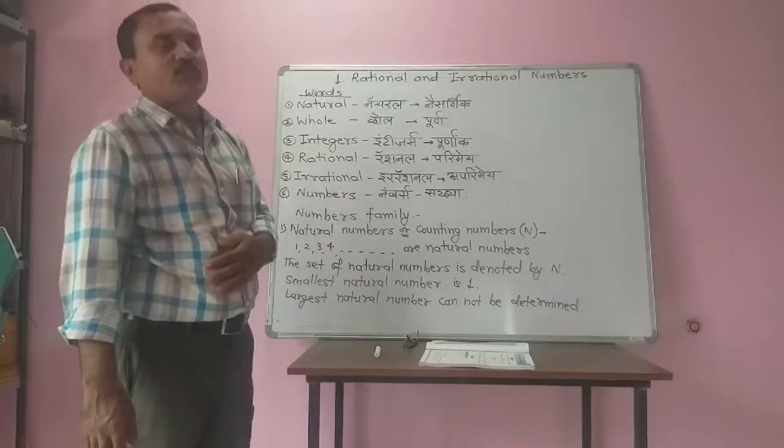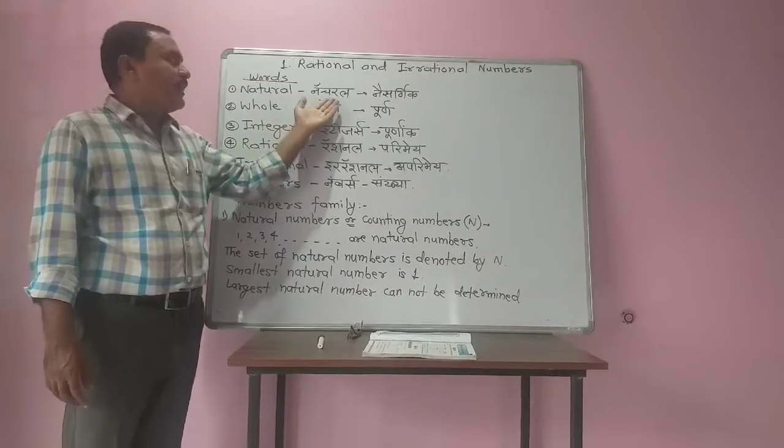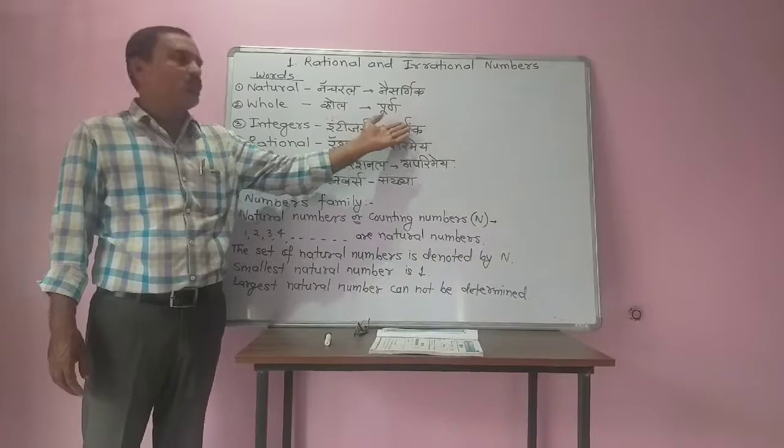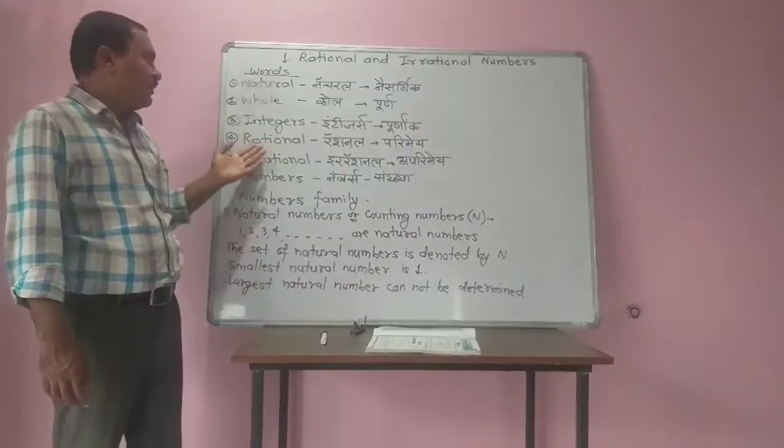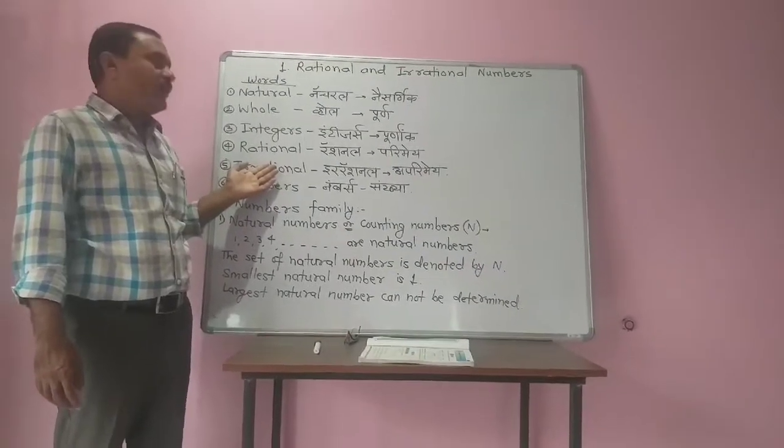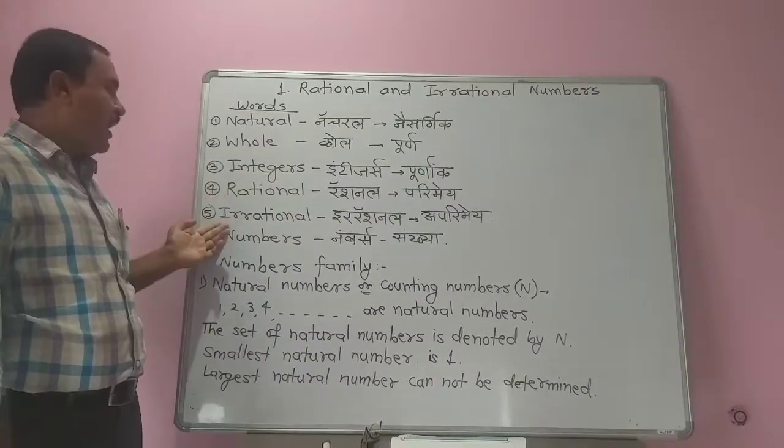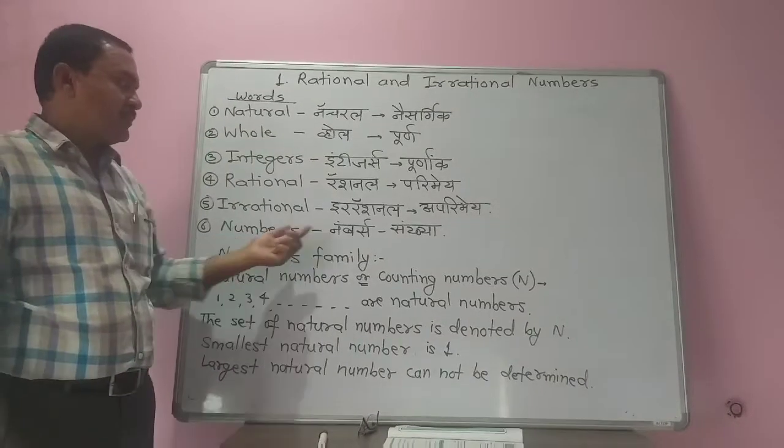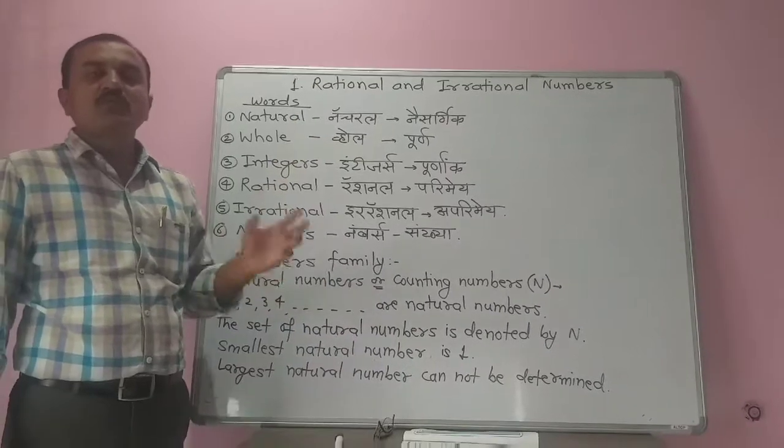First, I will give you vocabulary words we have to learn here. Natural means nisargik, whole (W-H-O-L-E) means purn, integers (I-N-T-E-G-E-R-S) means purnank, rational (R-A-T-I-O-N-A-L) means parimey, irrational (I-R-R-A-T-I-O-N-A-L) means aparimey, and numbers (N-U-M-B-E-R-S) means sankhya. These all words belong to the number family.